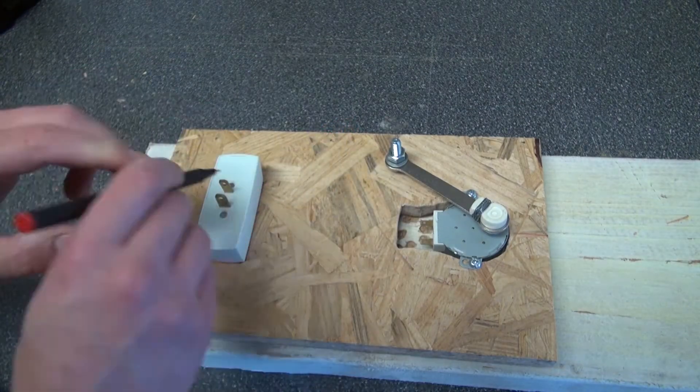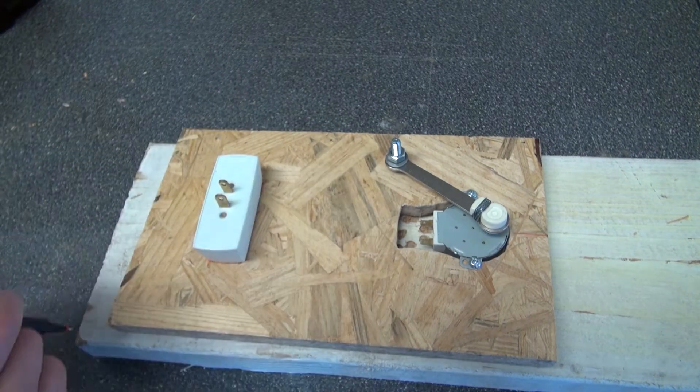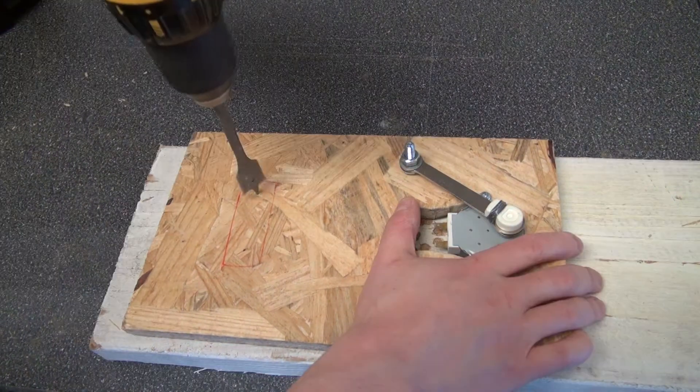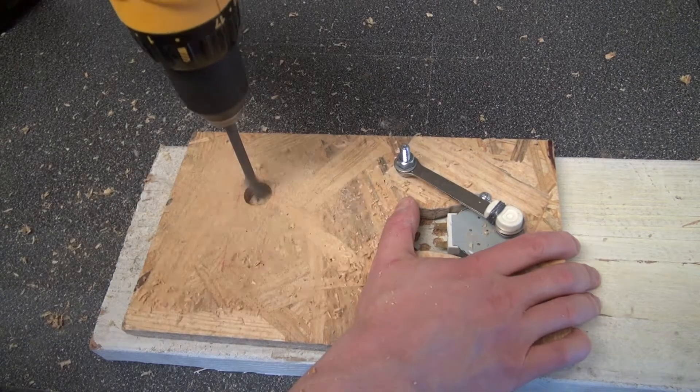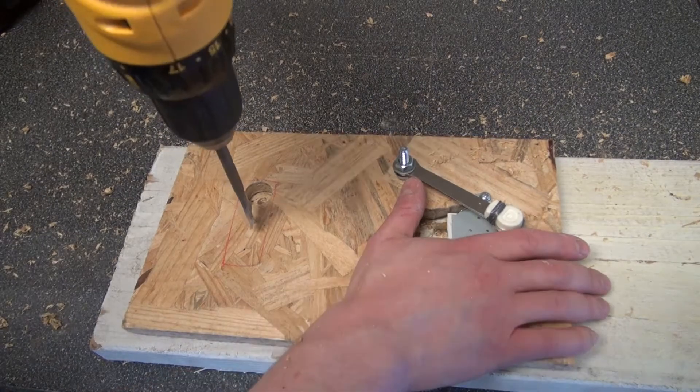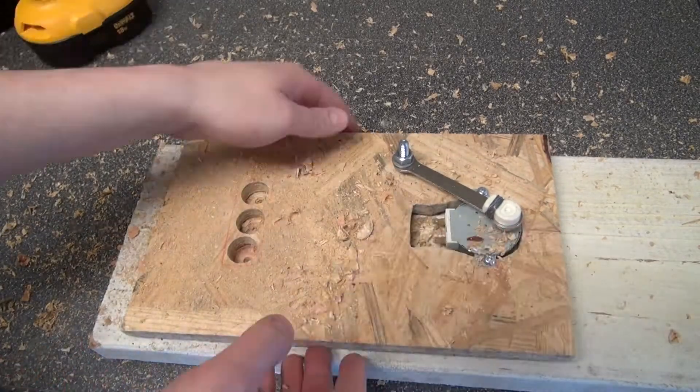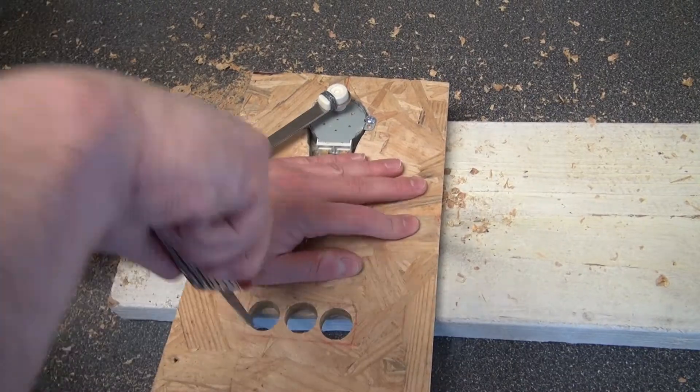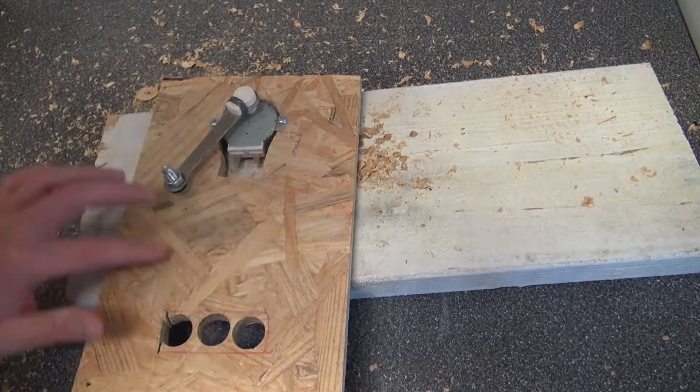Now I'm going to take this triple plug outlet and I'm going to trace around that. So I'm going to place it right about there. I'm going to cut out some holes. Use my pocket knife to saw out the holes.